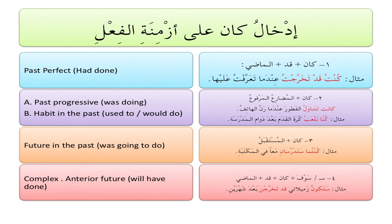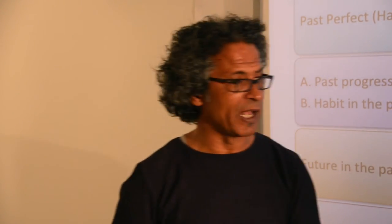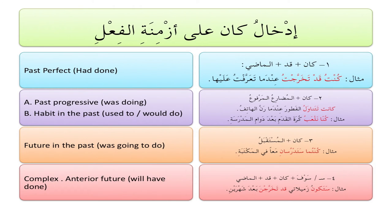The third possibility is كان مع المستقبل. Remember, المستقبل is formed by سـ or سوف with المضارع المرفوع. In this case we use سـ, and it gives us the meaning of 'future in the past' — that is, 'was going to do something.' Example: كنتما ستدرسان معاً في المكتبة — the two of you were going to study together at the library.